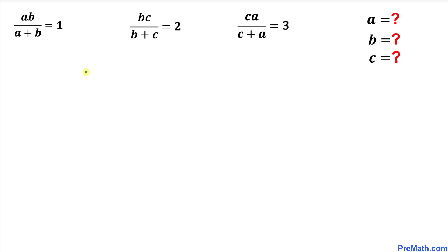Welcome to PreMath. In this video, we are going to solve this given system of rational equations. The first equation is AB divided by A plus B equals 1. The second equation is BC divided by B plus C equals 2. And the third equation is CA divided by C plus A equals 3. In other words, we are going to find the values of A, B, and C.